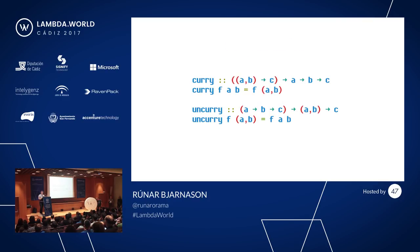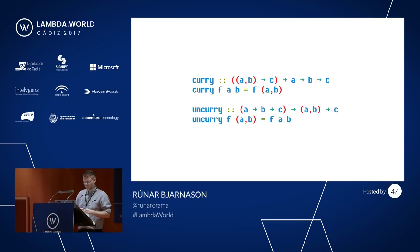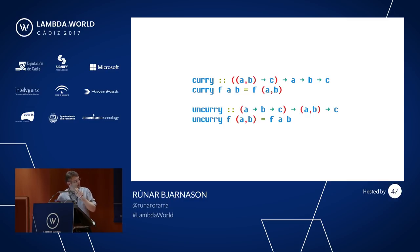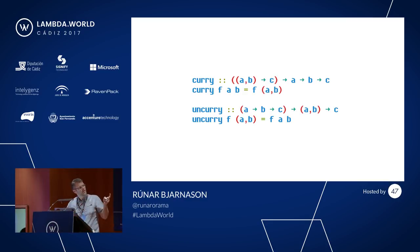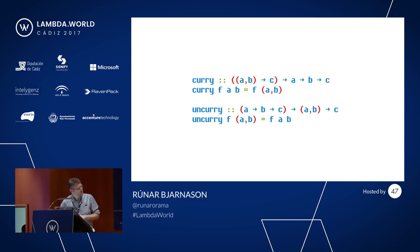To show what adjunctions actually are, it's best to start with an example. An example in programming that we can all relate to is the relationship between curried and uncurried functions. We can take a function that takes a pair A with B and returns a C, and turn it into a curried function that takes A and returns a partially applied function that then takes B and returns C. That's curry, and uncurry goes the other way.